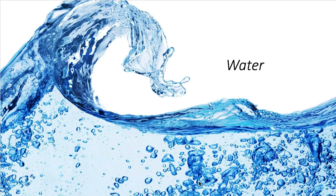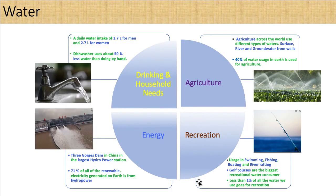Let's learn about water next. Water is used for drinking, household, irrigation, and for energy. Hydropower is an energy power generator for moving water. Let me add an interesting fact here: the Three Gorges Dam in China is the largest hydropower station in the world.